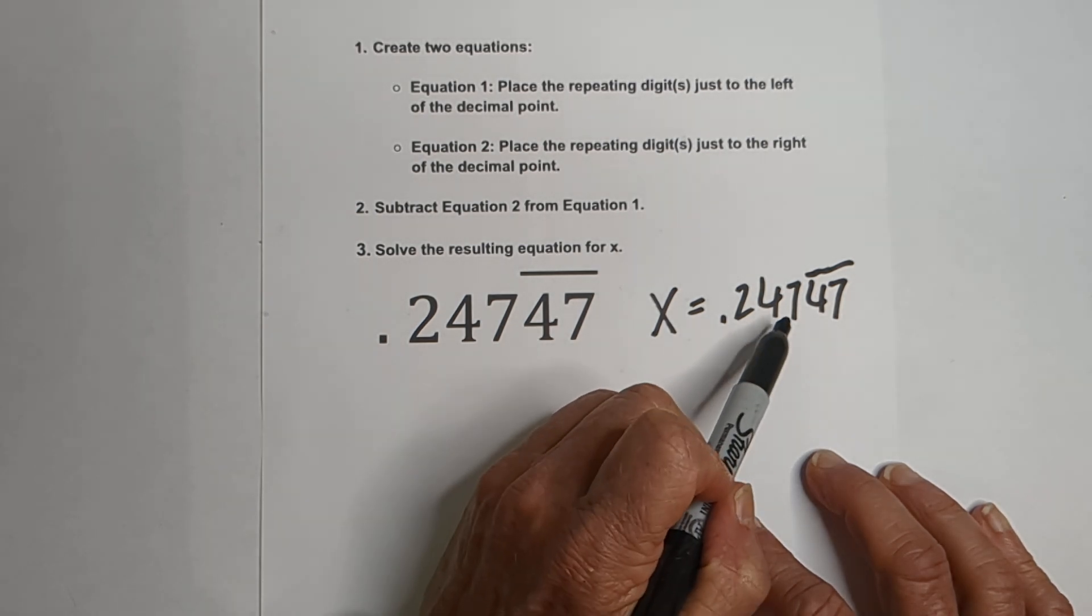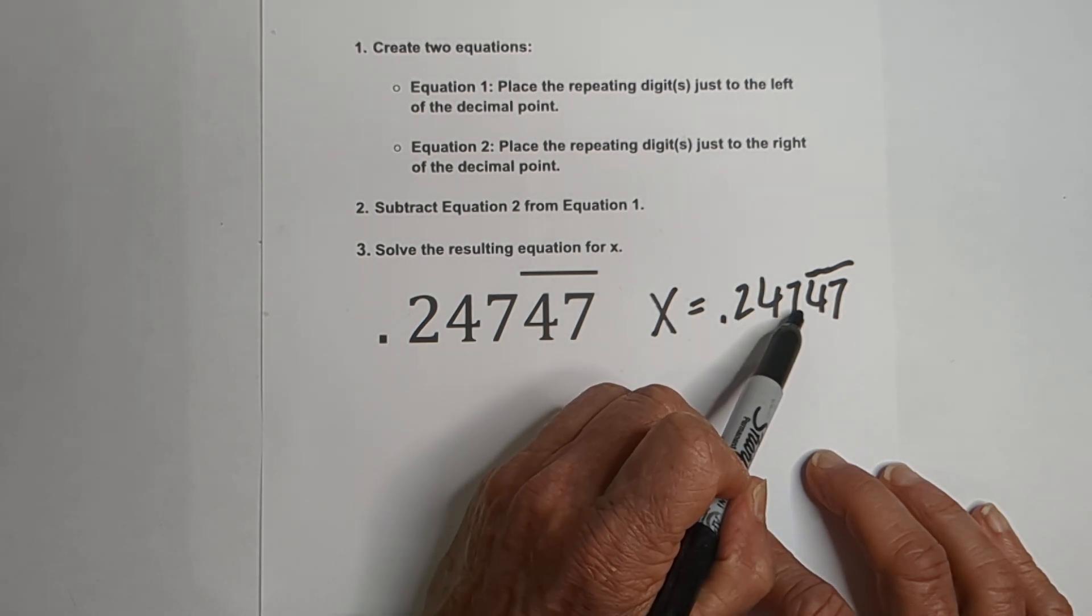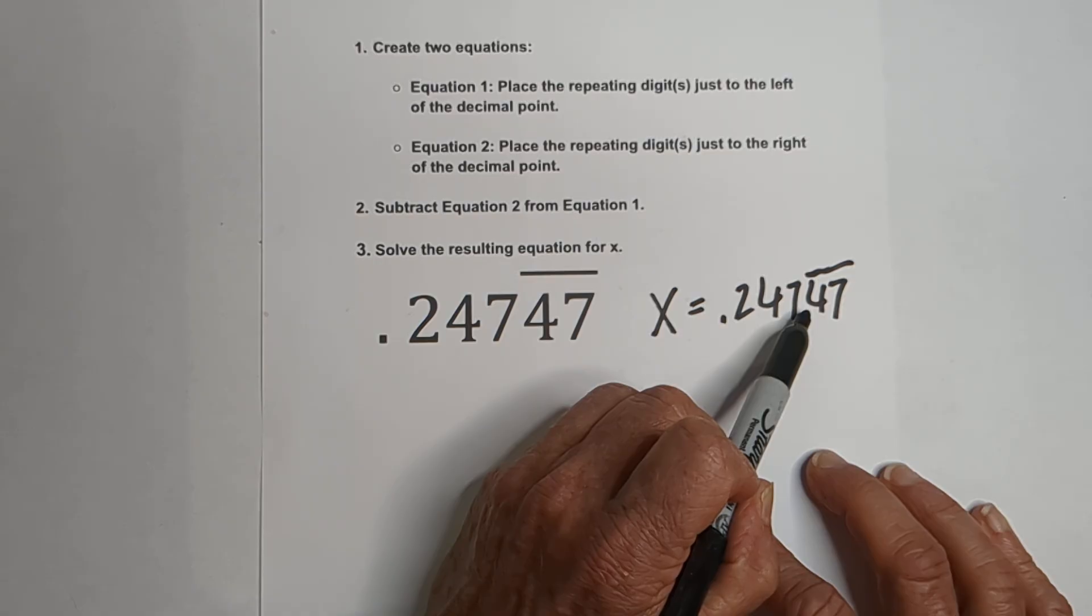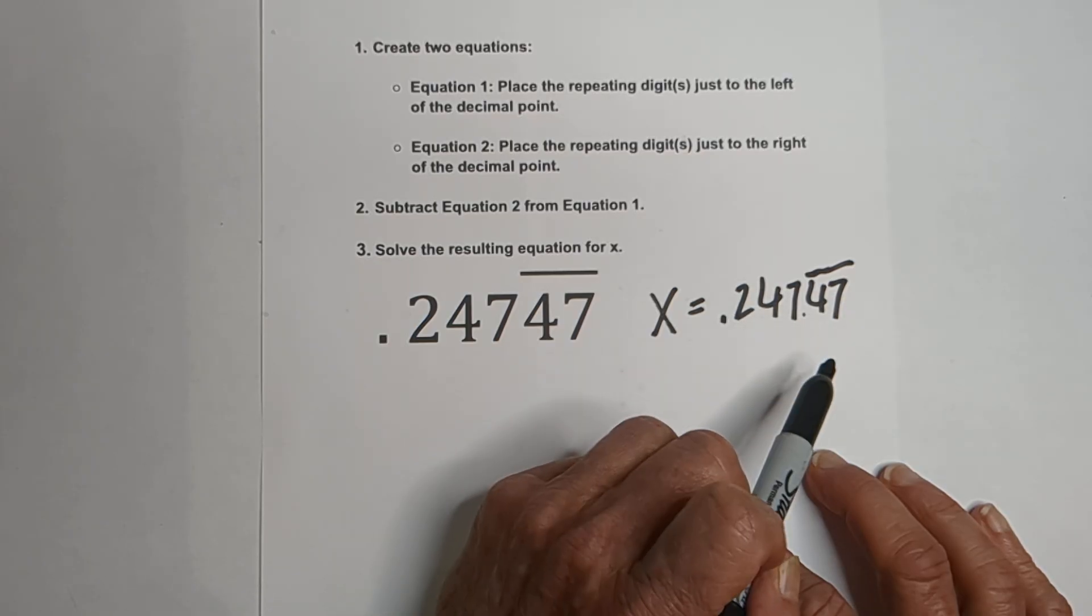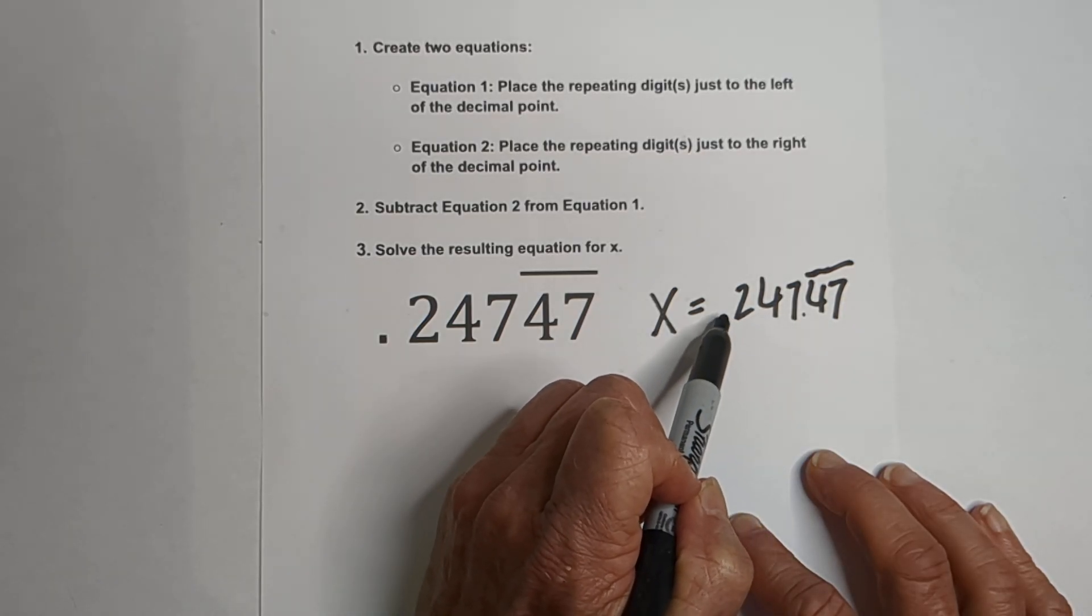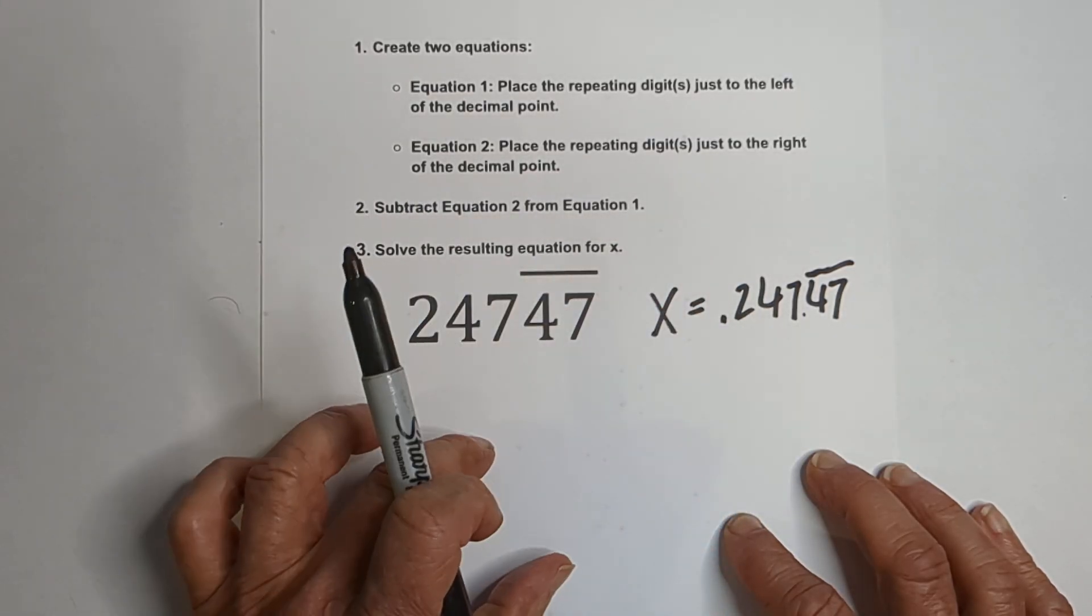Now, equation 1, we need the 47, because that's what is repeating, just to the left of the decimal. And we can do this by moving the decimal 1, 2, 3 places to right there. And we can do this by multiplying it by 1,000.